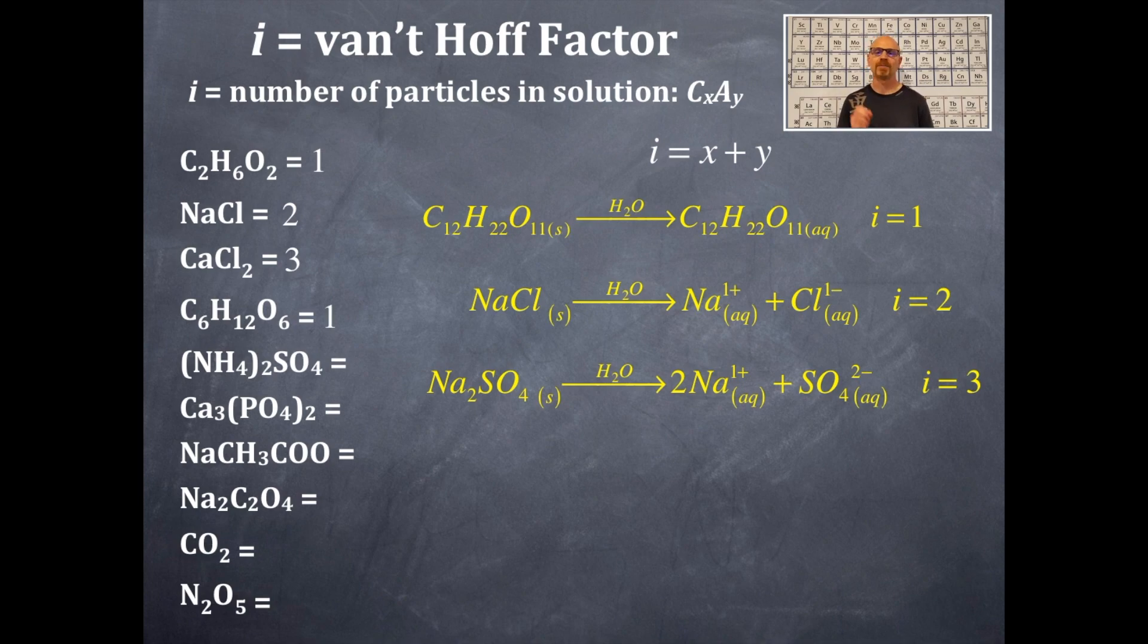Ammonium sulfate. Ammonium sulfate. There are two ammonium ions, that's two cations and one sulfate. So that's a van't Hoff factor of three. And calcium phosphate is also a cation anion combination. So you have three calciums and two phosphates. That's a total of five.